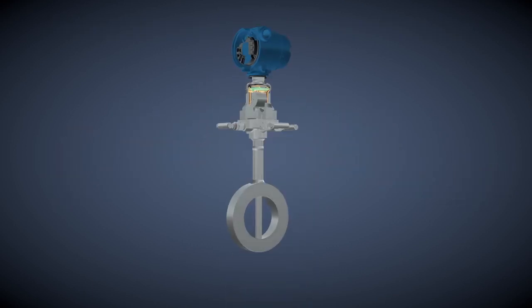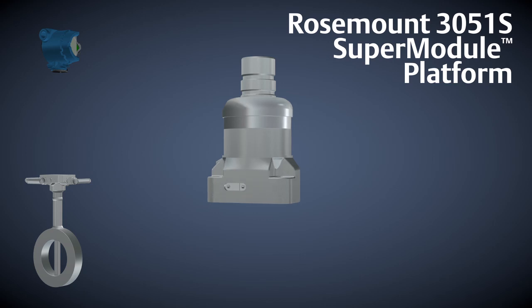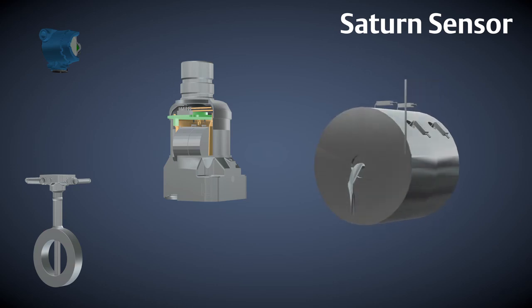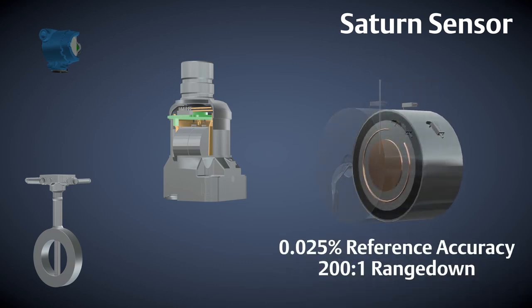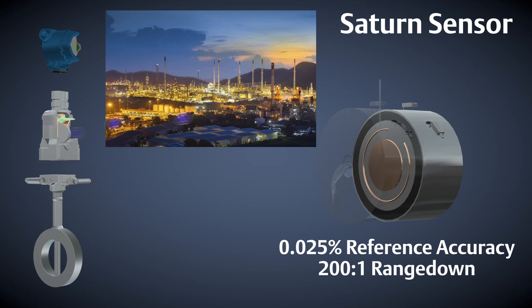The heart of this scalability begins with the Rosemount 3051S supermodule platform, which is the industry's most advanced pressure technology architecture. Inside is the patented Saturn sensor, which has an additional sensing ring that provides up to 0.025% accuracy and 200 to 1 range down capabilities, allowing you to use fewer models to cover all your pressure ranges.